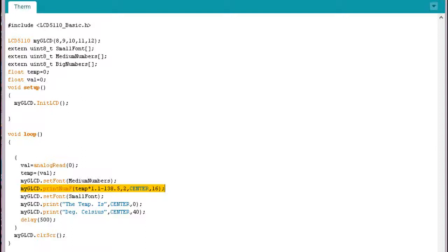Thanks to the header file it is quite short. You may have to adjust the values of the line myGLCD.printNumF temp asterisk 1.1 minus 138.5 to center 16 depending on how you mount the integrated circuit.